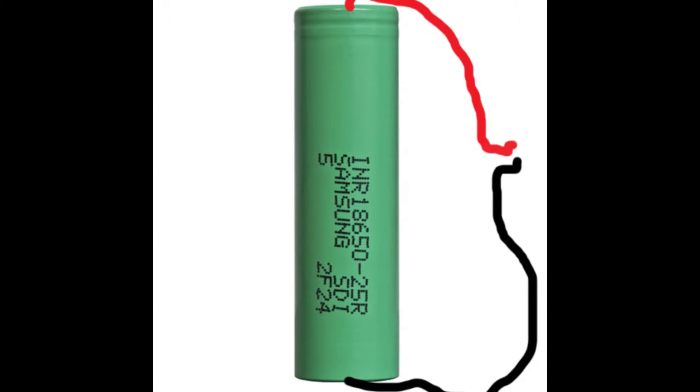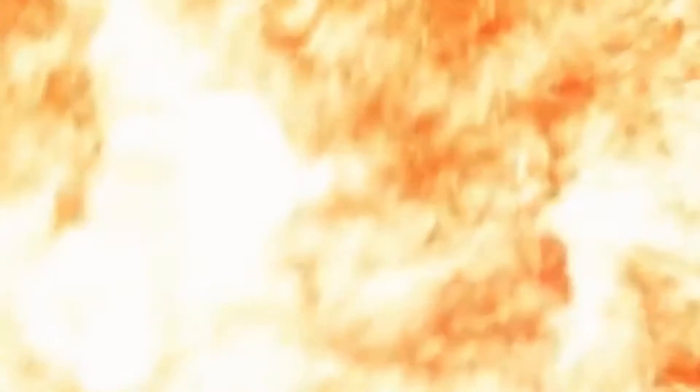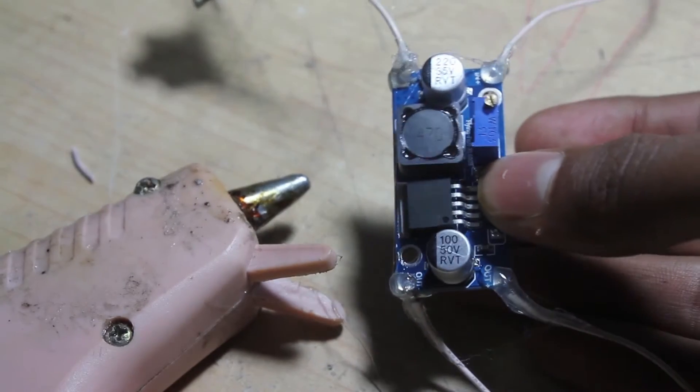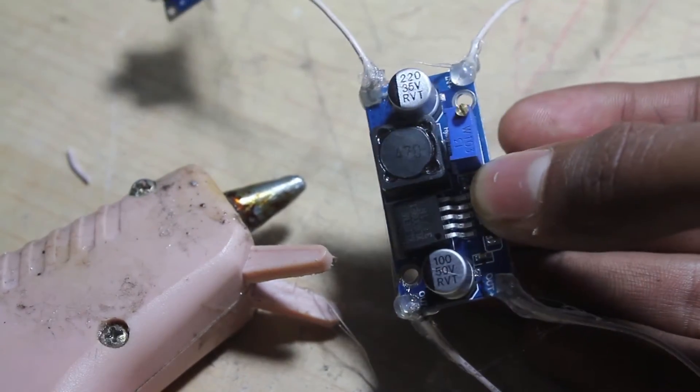These batteries are quite powerful and can cause fires if anything is short-circuited. Hot glue is used to cover up each connection to prevent this from happening.